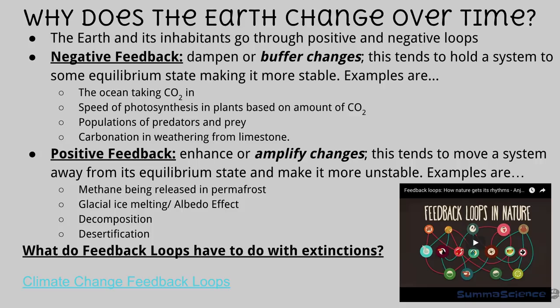Another good example of a negative feedback loop is a predator-prey relationship. Imagine there is a sudden influx of mosquitoes in your neighborhood. After a while, the mosquitoes attract predators in the form of bats. These bats come in and eventually eat enough mosquitoes for the population to go down. Due to the lack of mosquitoes, the bats may leave in search of food. Over time, the mosquito population will rise again, the bats may come back, and this cycle continues. Over a long enough period of time, a balance is reached between the two.